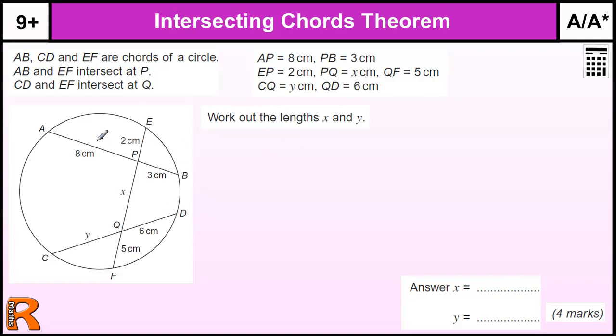And the rule is, if we are looking at this one, say for example, this chord AP times by PB, so the distance from A to P times by the distance from P to B, is going to be equal to the distance from E to P times by this distance here from P to F.